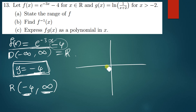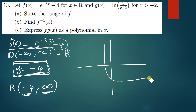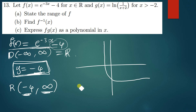So this curve when you sketch it will look something like this. In case you don't know what I'm doing right now, you can just request the video and I'll send it to you. This line is now going to be our asymptote at negative 4.